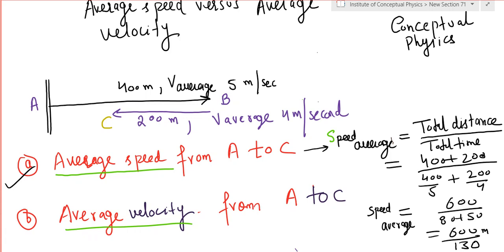Now please understand that average speed only cares about total distance. The sense of direction is not there when you calculate average speed. So you can see the formula, the total distance has been blindly added as 400 meters plus 200 divided by time.